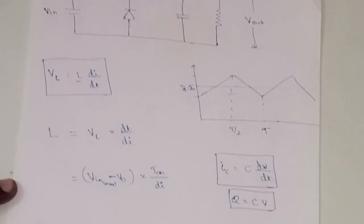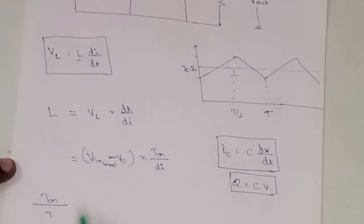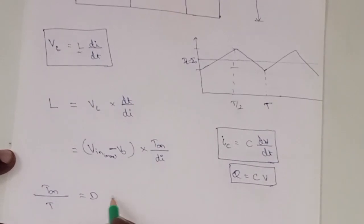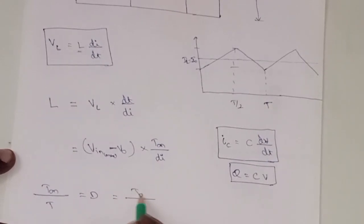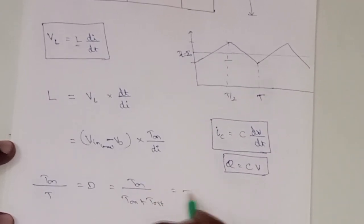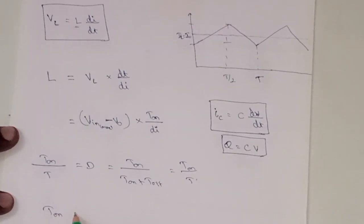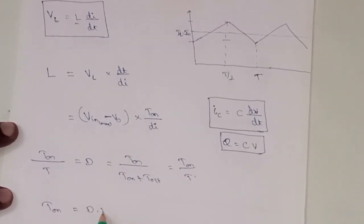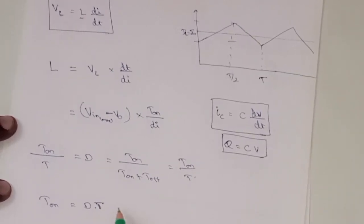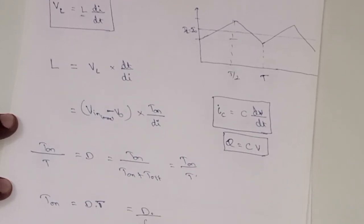Now Ton value. So Ton is - what does that mean? Ton divided by T is nothing but the D, right? That means D is the duty cycle. Duty cycle is nothing but the on time divided by total time, Ton plus Toff. That is Ton divided by T. If we rearrange this one, Ton will become D into T. So and further we can, T is nothing but 1 by F, 1 by switching frequency. So D into 1 by switching frequency.